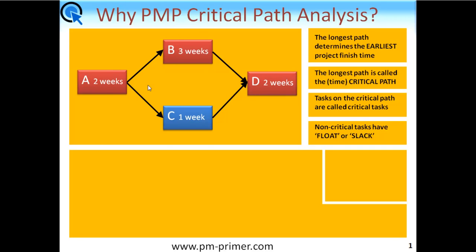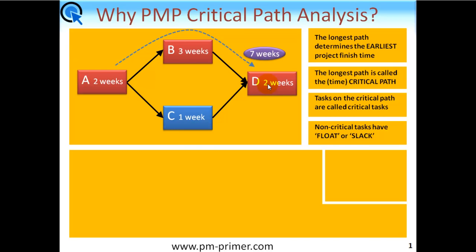Which leaves Tasks B and C in parallel in the middle. Clearly, B is the longer of the two at three weeks, and C is only one week. So you'd be absolutely correct if you said that the critical path is Task A, B, and D. If we add those up, we can see the earliest finish time based on that longest path gives us seven weeks.